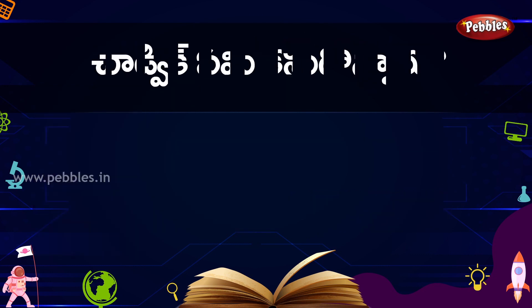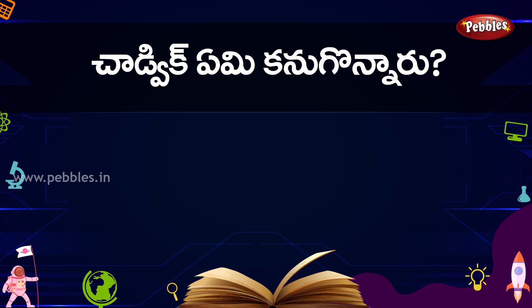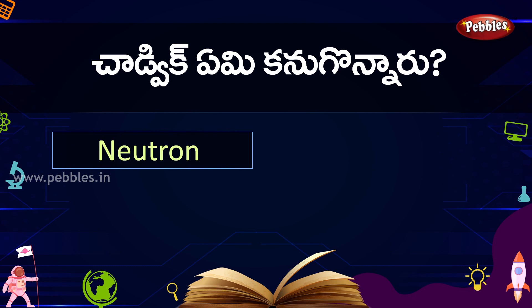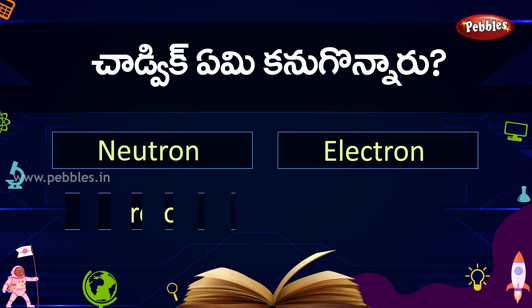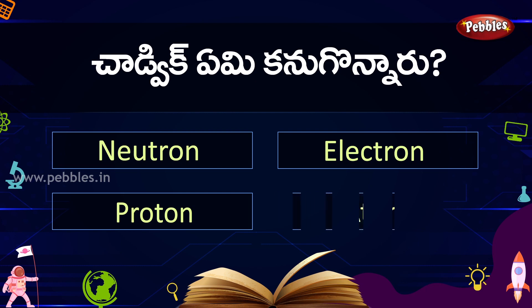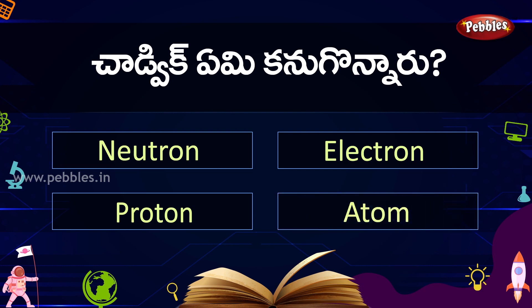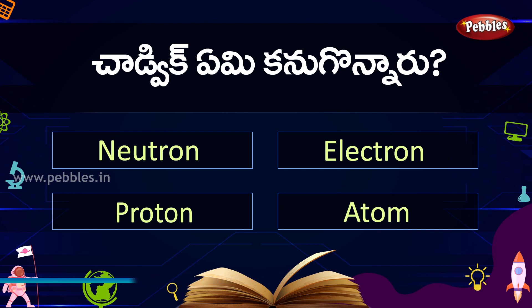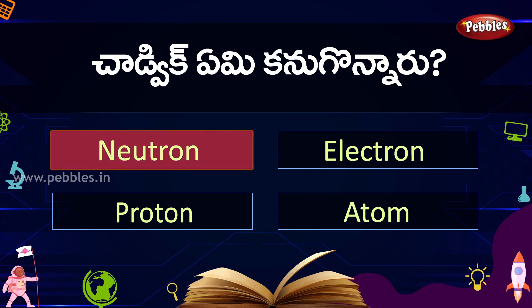Next question. Chadwick — what is the name? The options are: A. Neutron, B. Electron, C. Proton, D. Atom. The correct answer is A. Neutron.